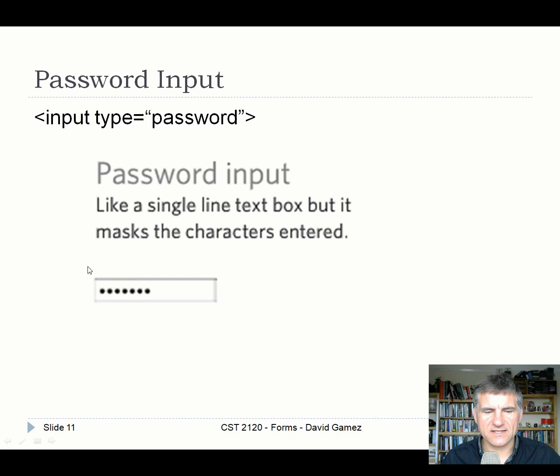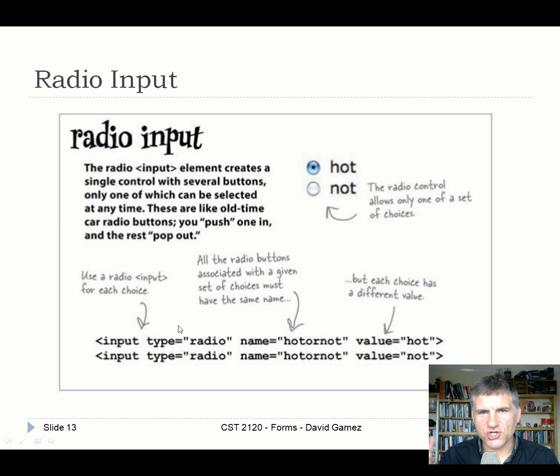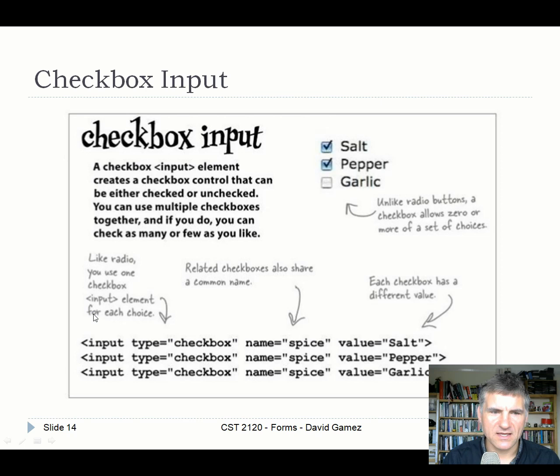Password input is the same as text except the characters are obscured to prevent shoulder surfing. The submit input is unique within a form — clicking it processes and submits the form. Radio inputs present a choice between multiple options. Both radio inputs share the same name because you're making one exclusive choice, and the value differs depending on what the user selects.